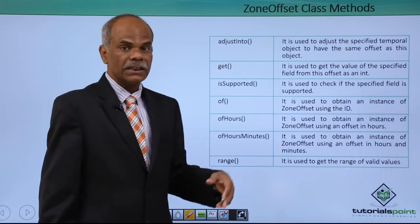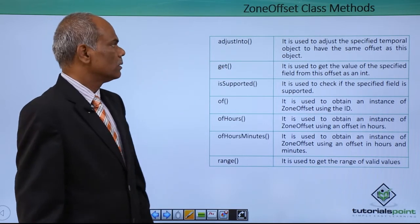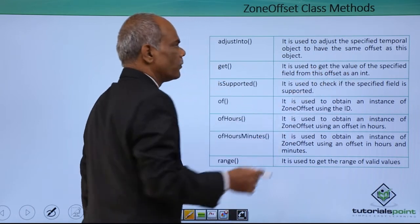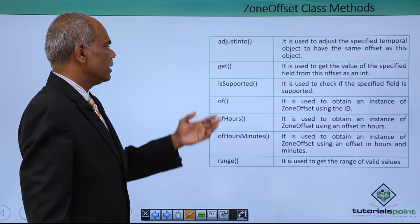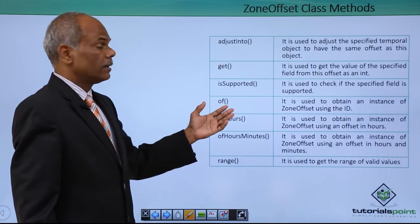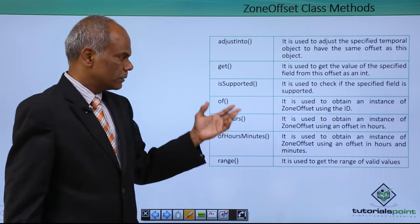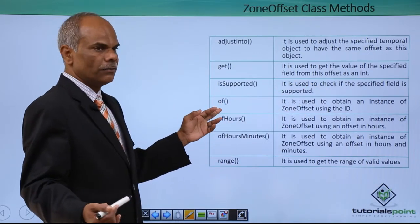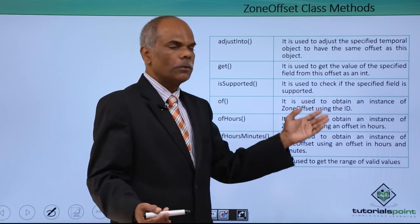What are the functions associated with the zone offset? Adjust into is used to adjust the specified temporal object to have the same offset. Get gets the value of a specified field. Is supported is used to check if the supported field is available or can be used. Of is used to obtain the instance of zone offset from the ID.